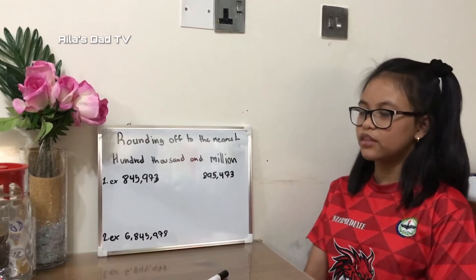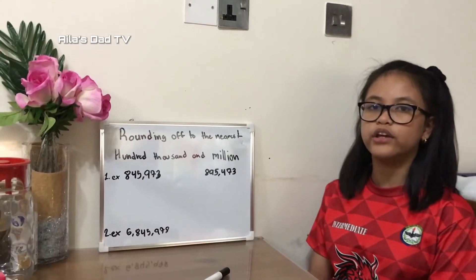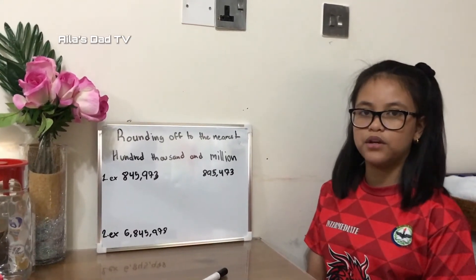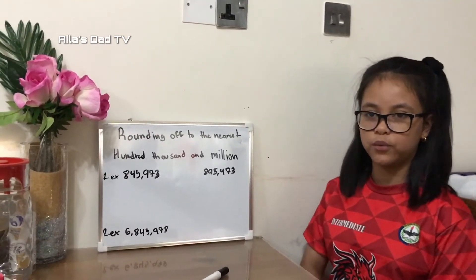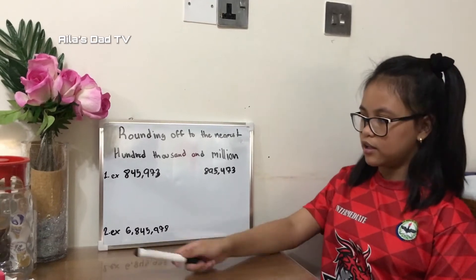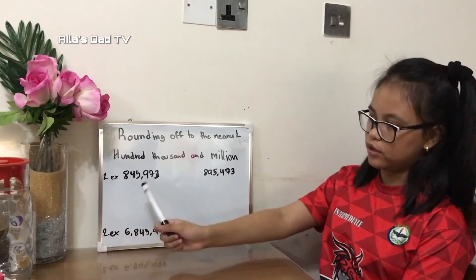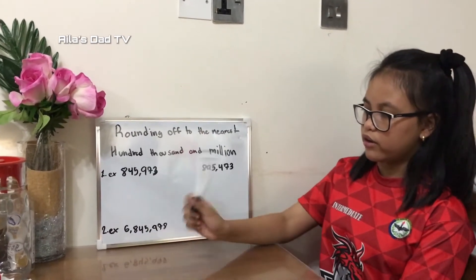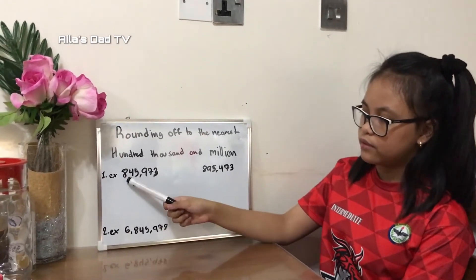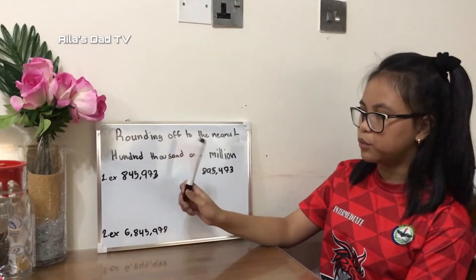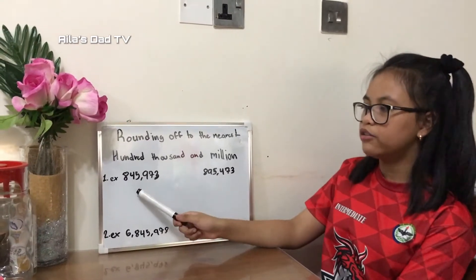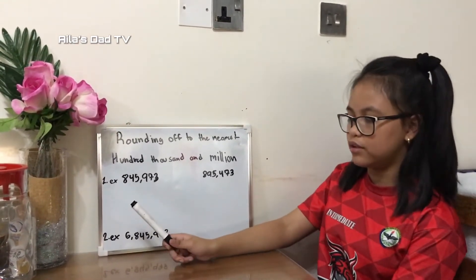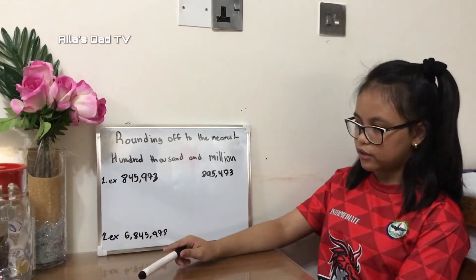We use rounding off because it makes the number easier to work with. For example, this number is very hard to read, but when you round it off it will be much easier to read. So let's continue.